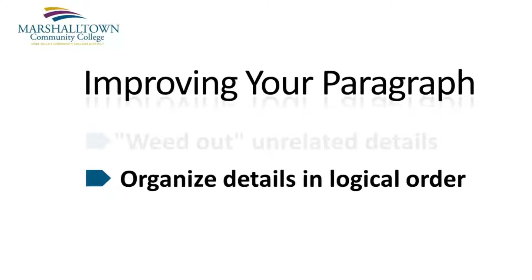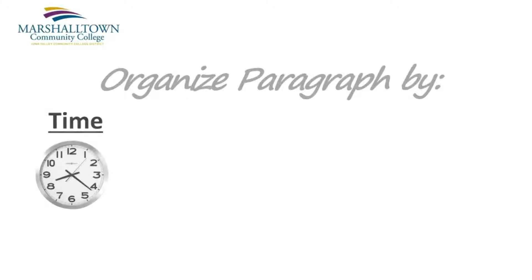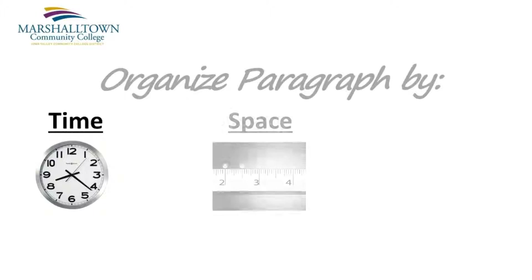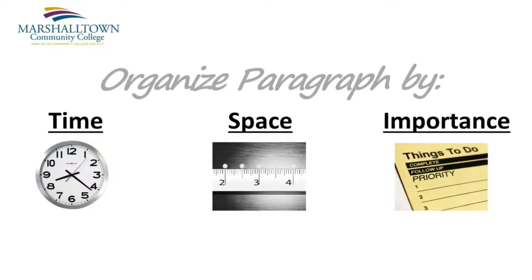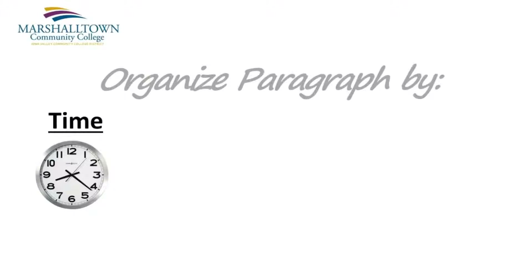Now let's take a look at how organization can help make your paragraph more clear and concise. A paragraph can be organized in three different ways: you can organize a paragraph by time, you can organize a paragraph by space, and you can organize a paragraph by importance. Let's take a closer look at each of these.